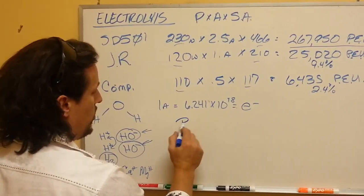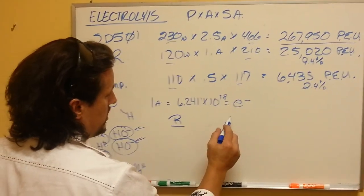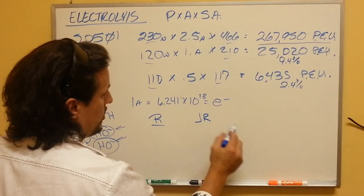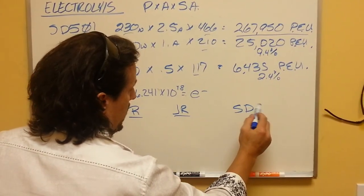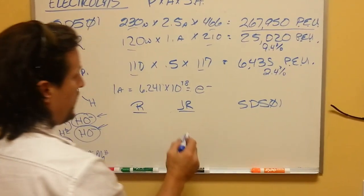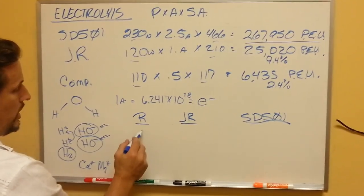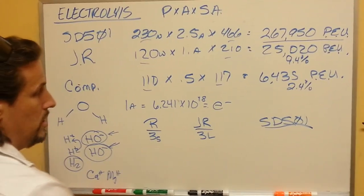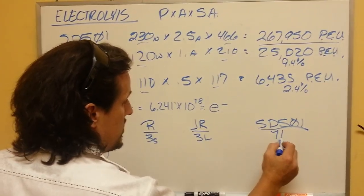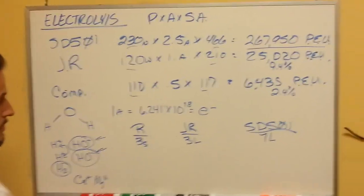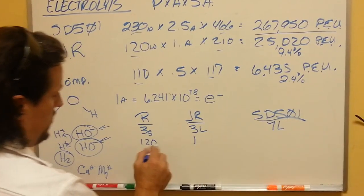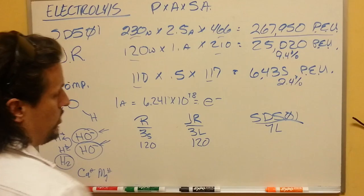So if you were to take the three main units that Enagic sells, you have the travel unit known as the R, you have the junior, and you have the SD501. Well, the R has three small plates. The junior has three large plates. The SD501 has seven large plates. This has 120 watts. This has 230 watts.